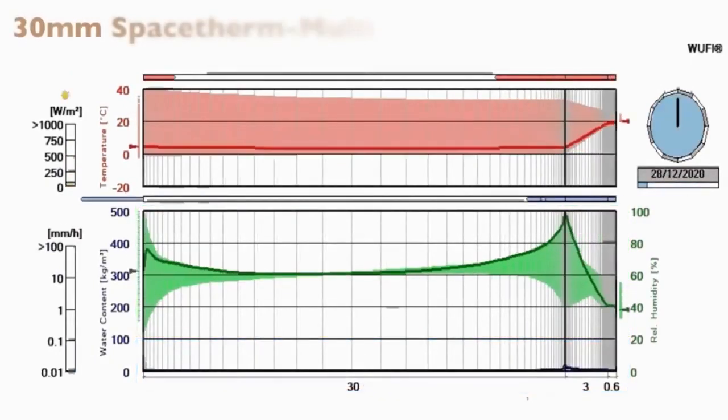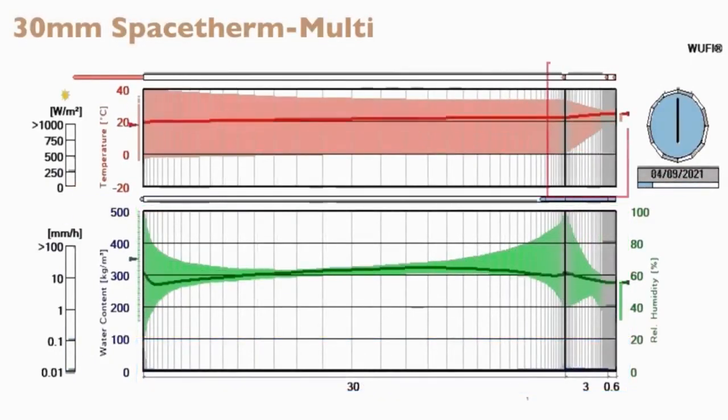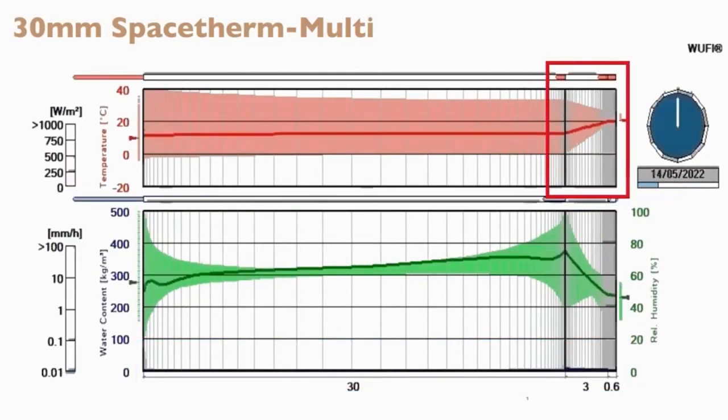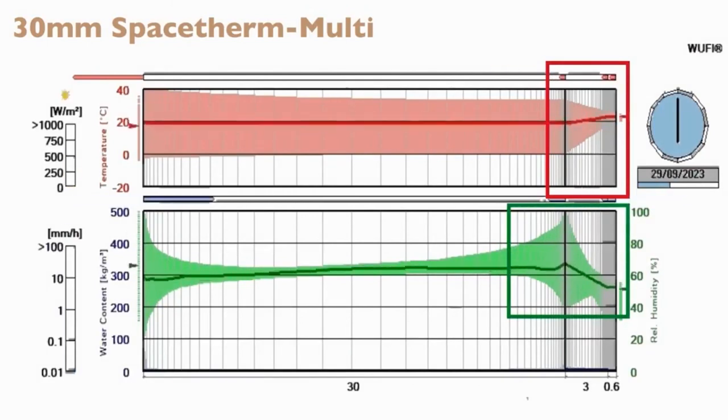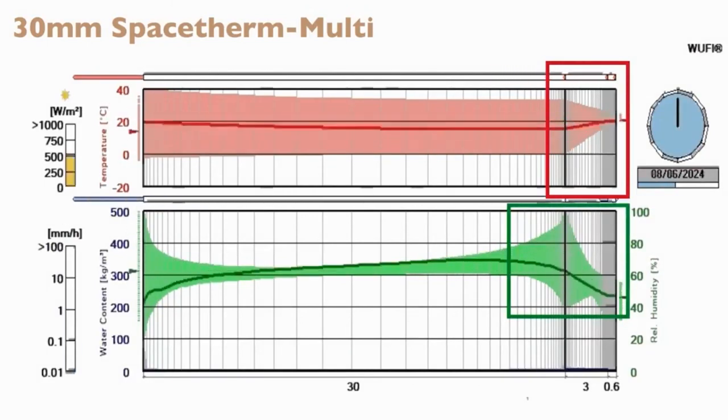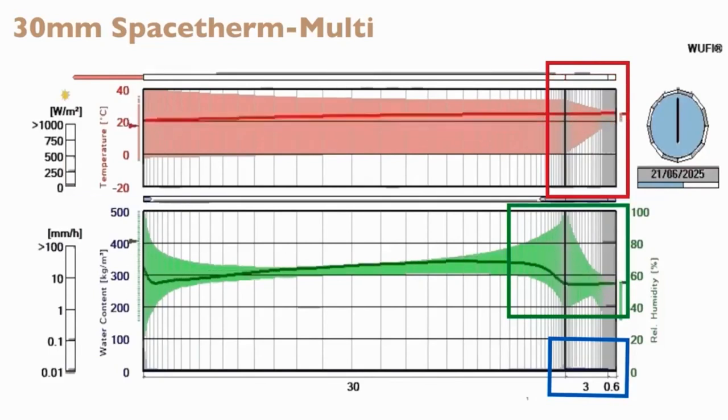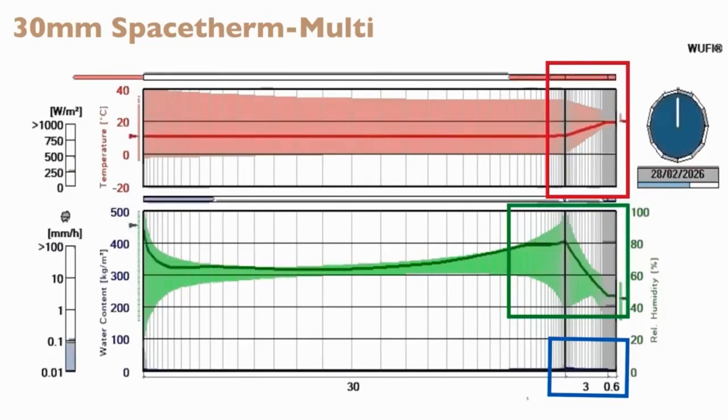If we now increase the insulation thickness to 30mm, we can see that the temperature gradient gets steeper through the insulation, but the relative humidity also increases as the inner surface of the stonework has become cooler. The moisture accumulation graphs are similar though, with no increase in water content.